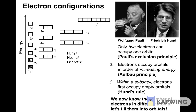For beryllium, atomic number 4, the first three electrons occupy the same orbitals as in lithium, and the fourth electron goes into the only orbital in the 2s subshell according to the Aufbau principle, so that the electron configuration is 1s² 2s².